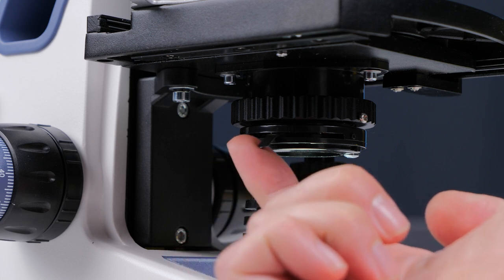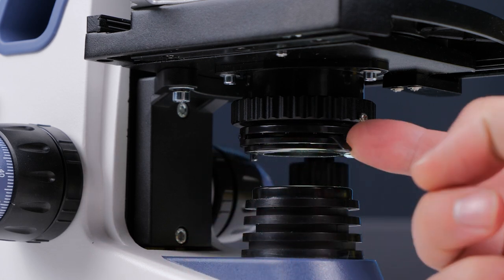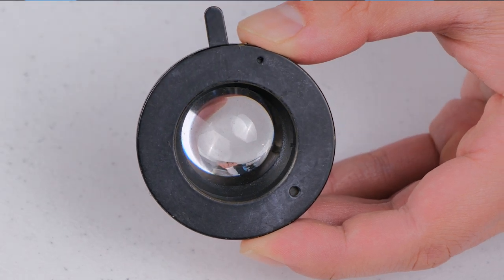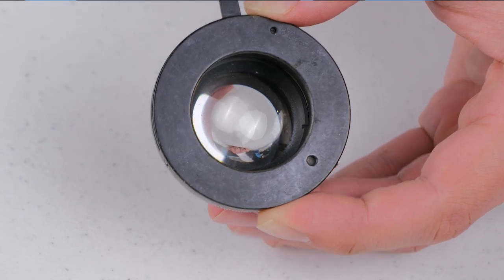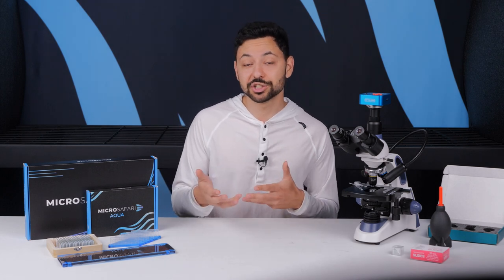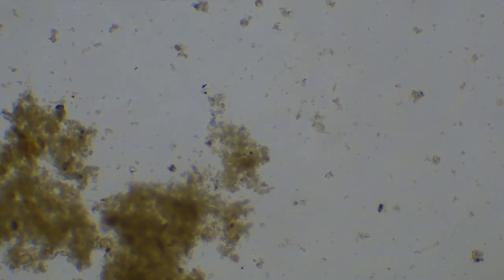Quick terminology lesson: this might be called an iris, an aperture, or a diaphragm. Each word technically means something slightly different but for now just know that they basically all mean the same thing in this context. Look through the eyepieces while adjusting this lever to see how it changes the way that the image looks.